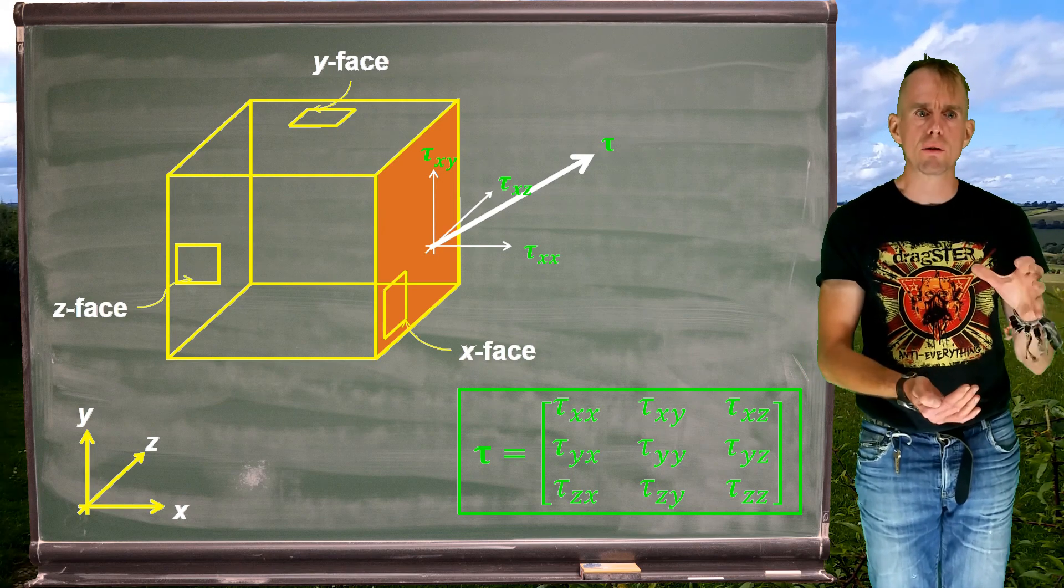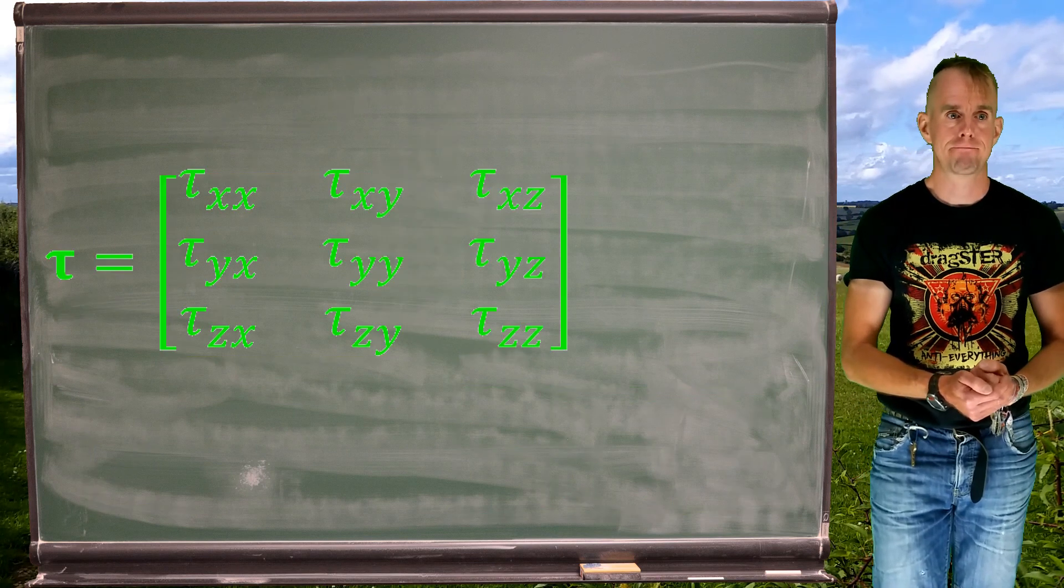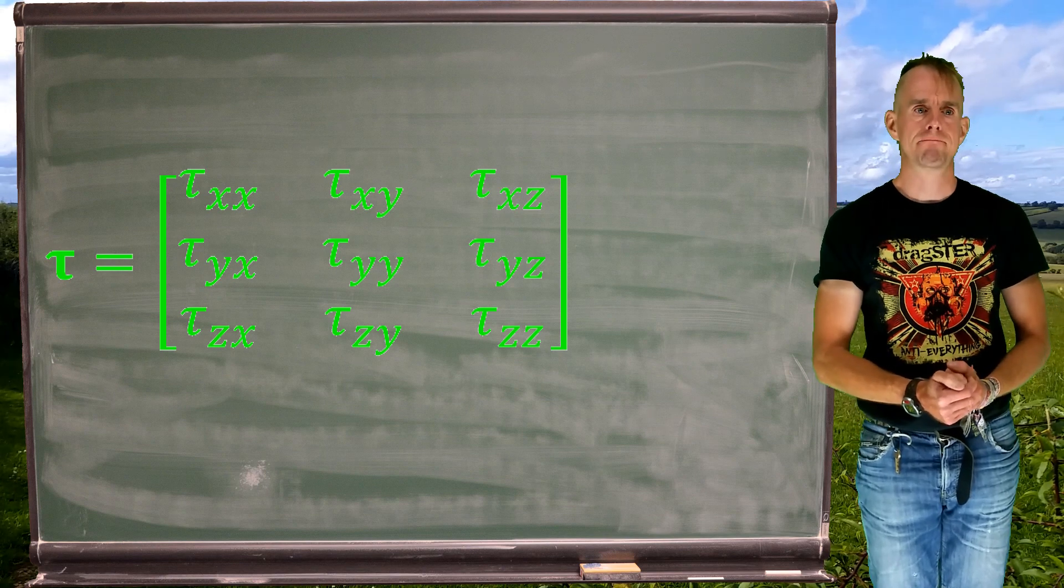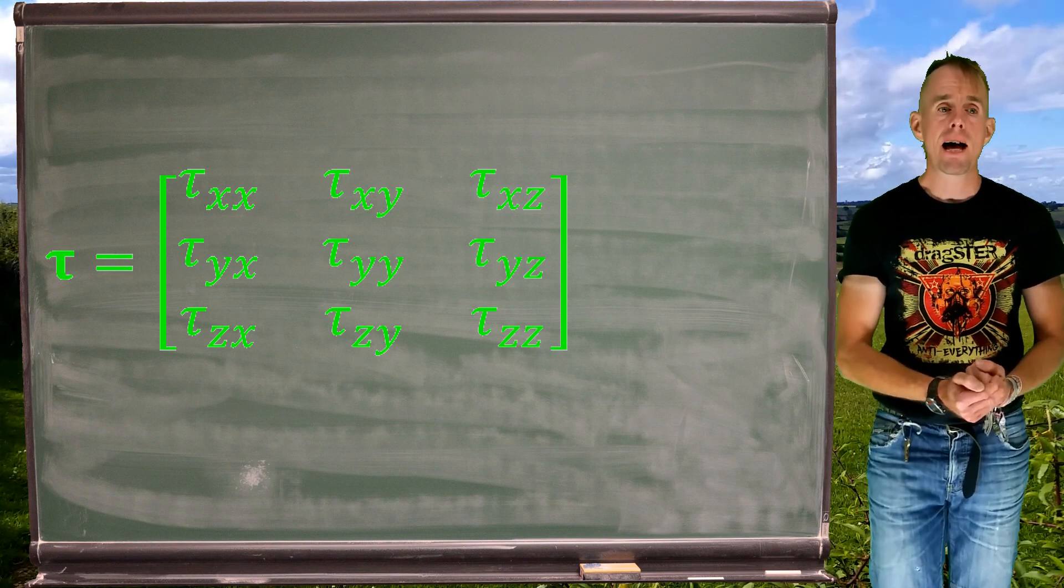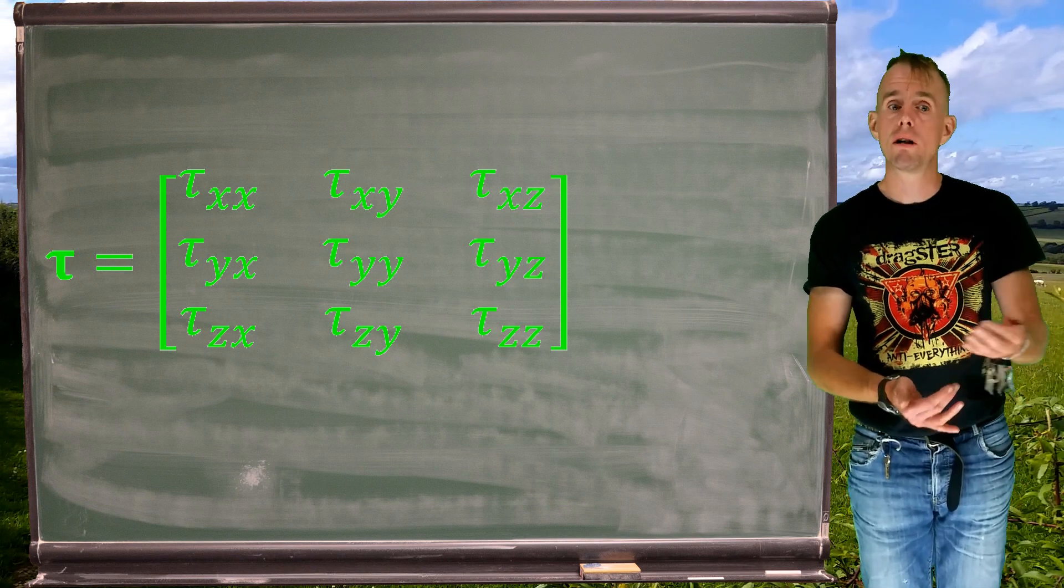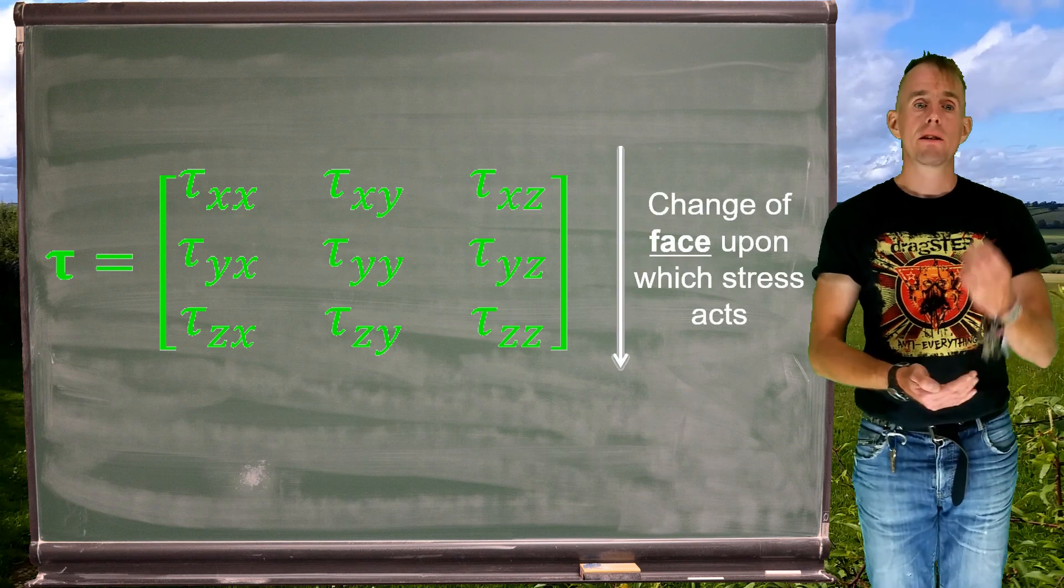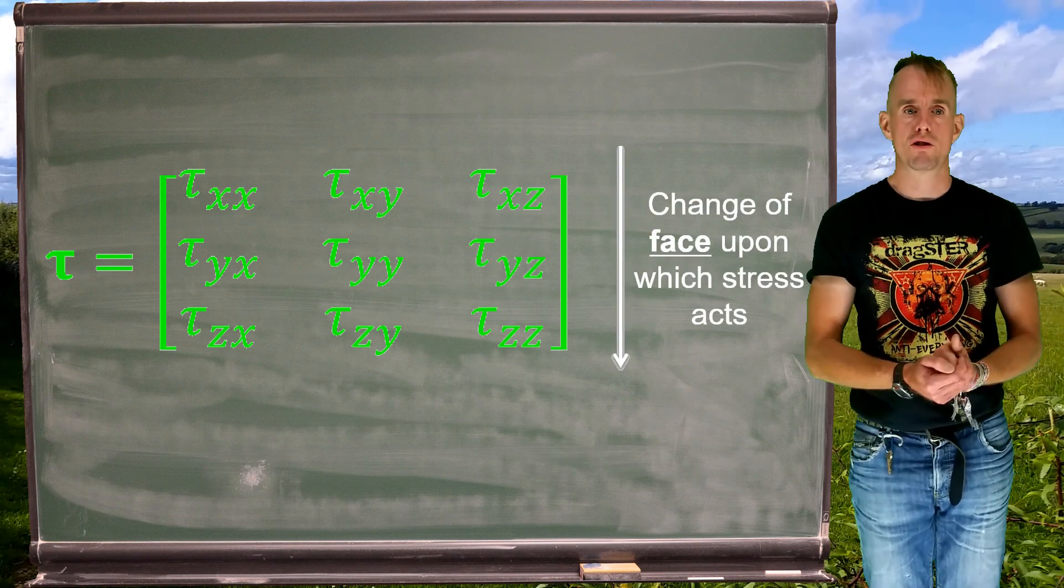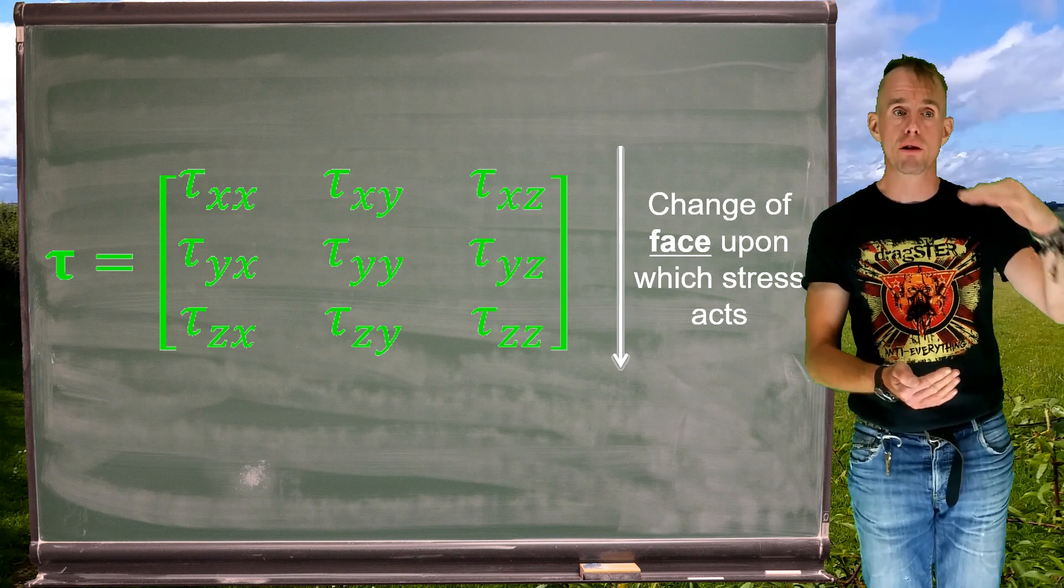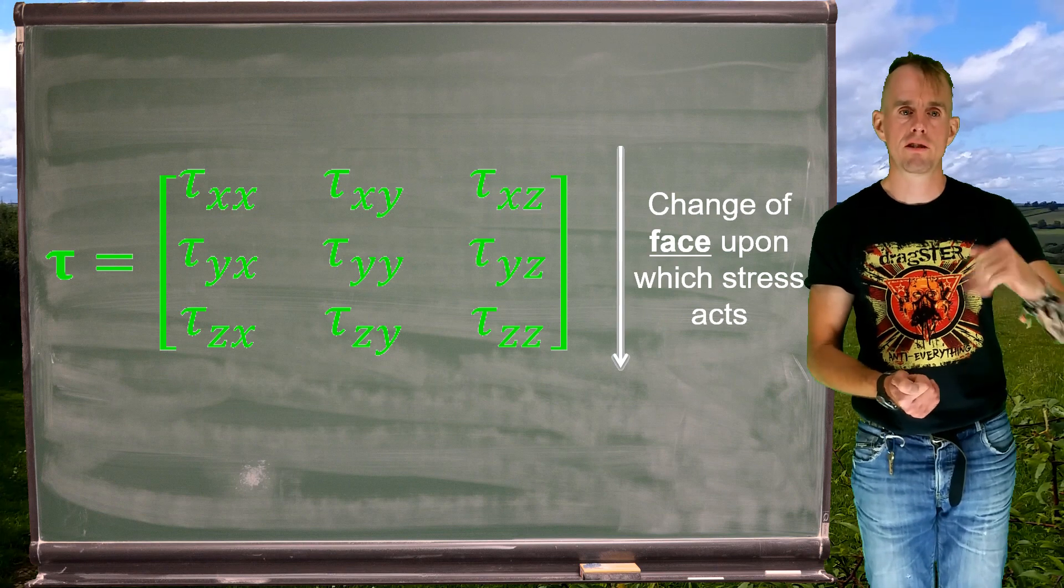So let's look at the structure of this tensor in a little more detail. Here we have it, the stress tensor. Nine elements, and we can gain a lot of information just by looking at which elements are zero and non-zero. Now recall that the change of face upon which the stress acts is the first letter. Face first. So as we go down in rows, we'll go from x face to y face to z face.